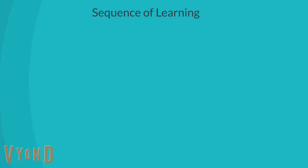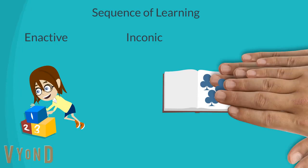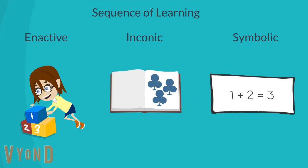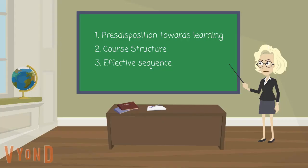In general, the sequences of learning should be moved from enactive, which is hands-on or concrete, to iconic, which is visual, to symbolic, which is the description in words or mathematical symbols.